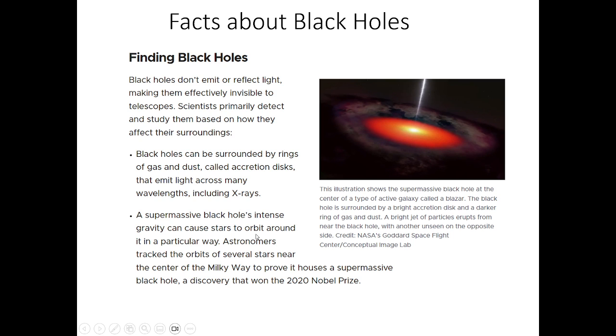A supermassive black hole's intense gravity can cause stars to orbit around it in a particular way. Astronomers track the orbits of several stars near the center of the Milky Way to prove that it houses a supermassive black hole, a discovery that won the 2020 Nobel Prize.